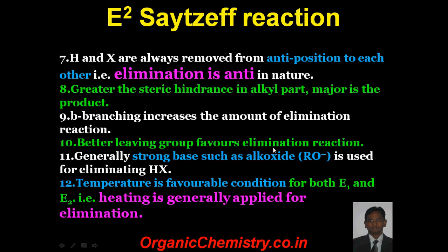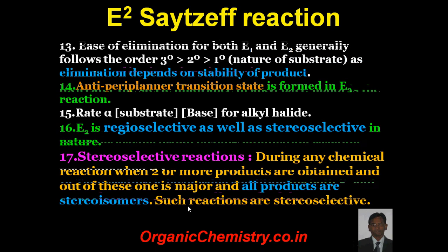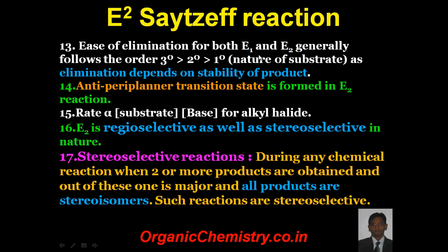A better leaving group favors elimination reaction. Generally, a strong base such as alkoxide is used for eliminating HX from alkyl halide. Temperature is a favorable condition for both E1 and E2 reactions — that is, heating is generally applied for elimination. Ease of elimination for both E1 and E2 generally follows the order: tertiary > secondary > primary. Anti-periplanar conformation is formed in E2 reaction, that is H and X are always removed from the anti-position to each other. Rate is directly proportional to concentration of substrate as well as concentration of base for alkyl halide. E2 is regioselective as well as stereoselective in nature.